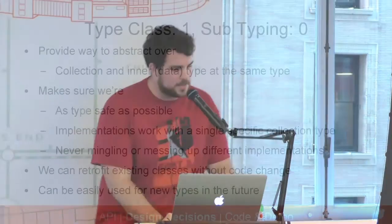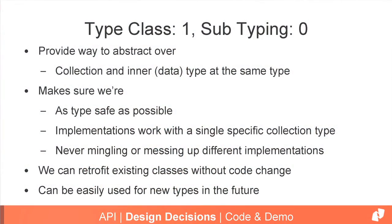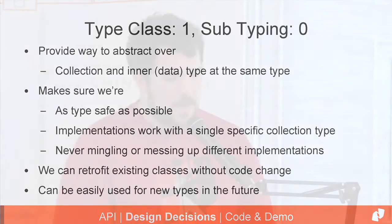So I'm going to declare success here: type class wins, subtyping loses. Type classes provide a way to abstract over both the collection type and the inner type. They ensure we're as type-safe as possible, implementations work with a single specific collection type, and we're never mingling different implementations. Type classes are also nice because you can use them to retrofit existing classes without changing their code, and you can easily extend them for new types in the future.